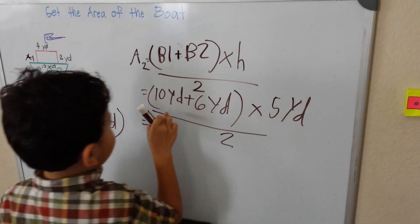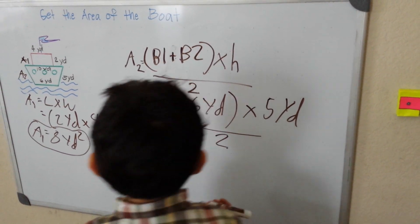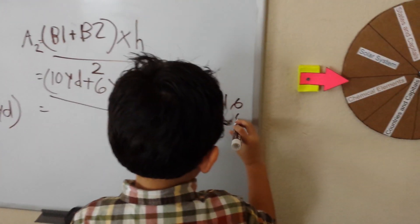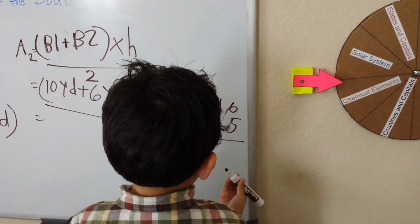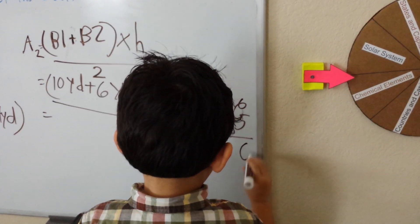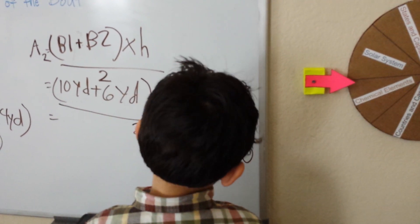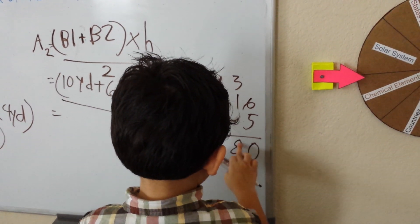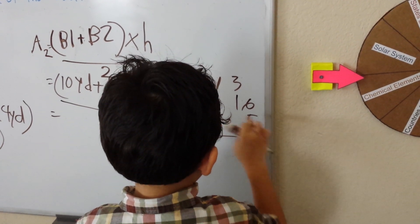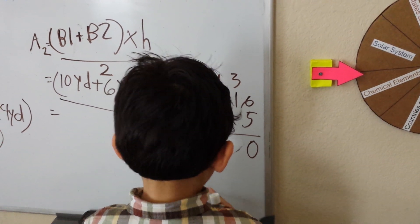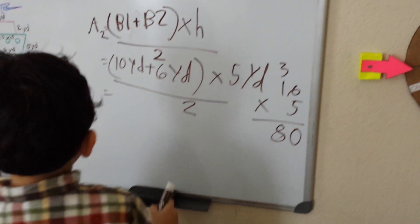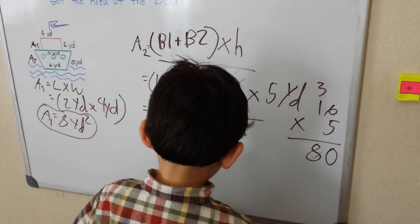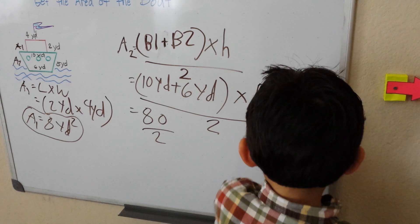Now I have 10 yards plus six yards, which is equal to 16 yards, times five yards equals 80, divided by 2.